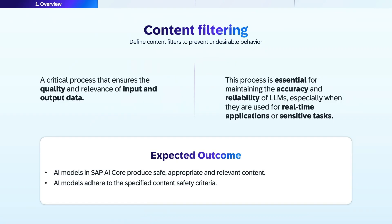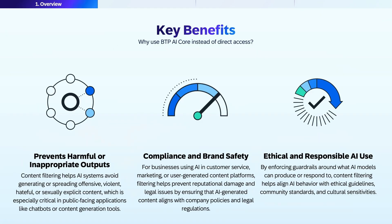By leveraging content filtering in SAP AI Core, you can produce safe and appropriate content adhering to specific content safety criteria, maintaining accuracy and reliability, especially for real-time or sensitive tasks. Throughout this session, we'll explore how to safeguard these interactions through content filtering and related strategies.